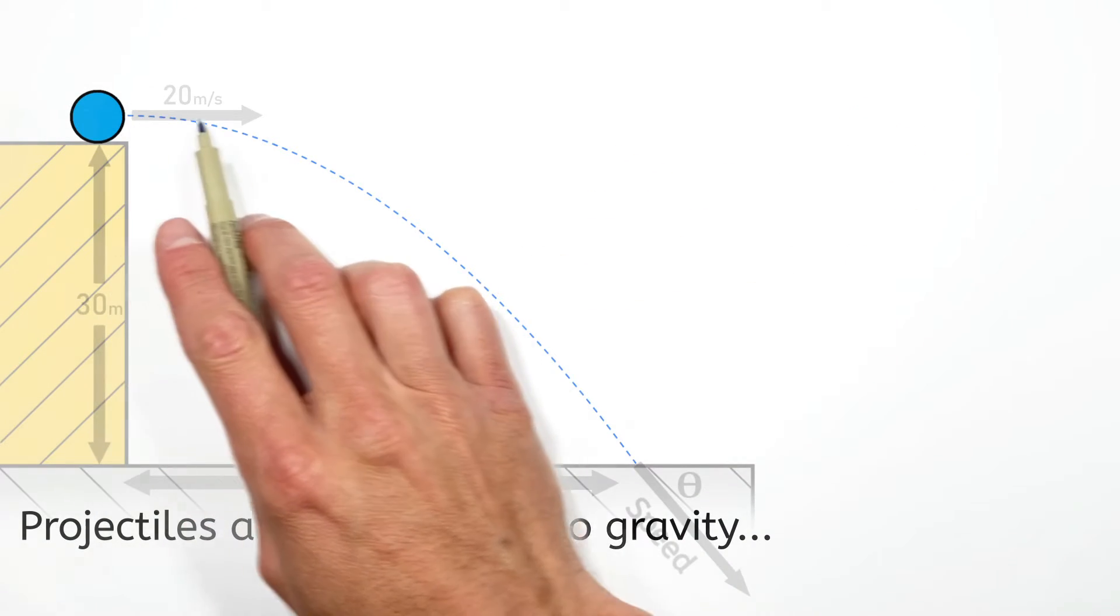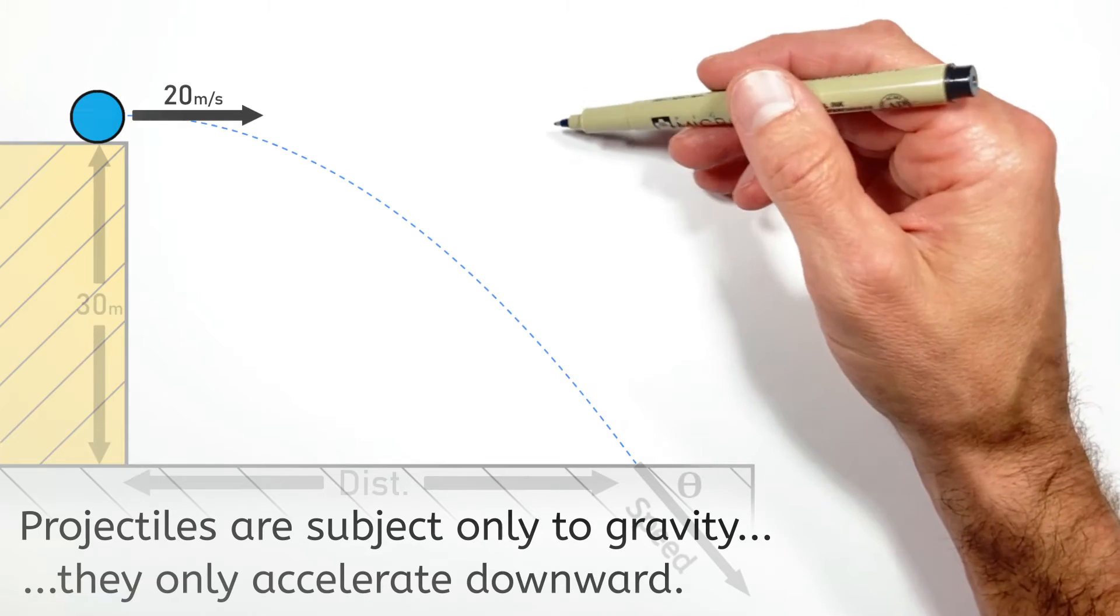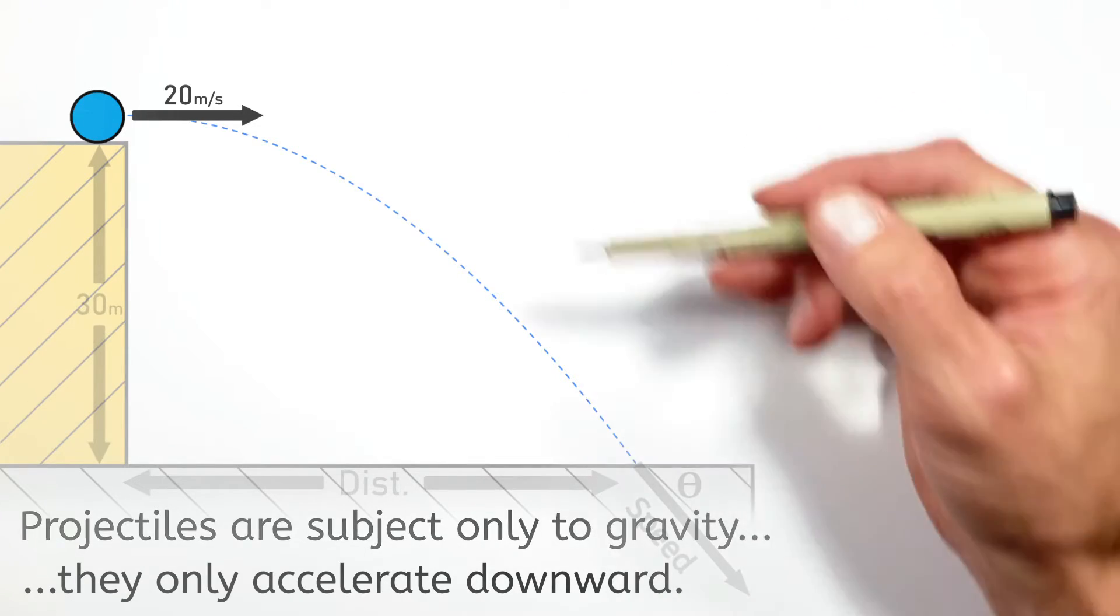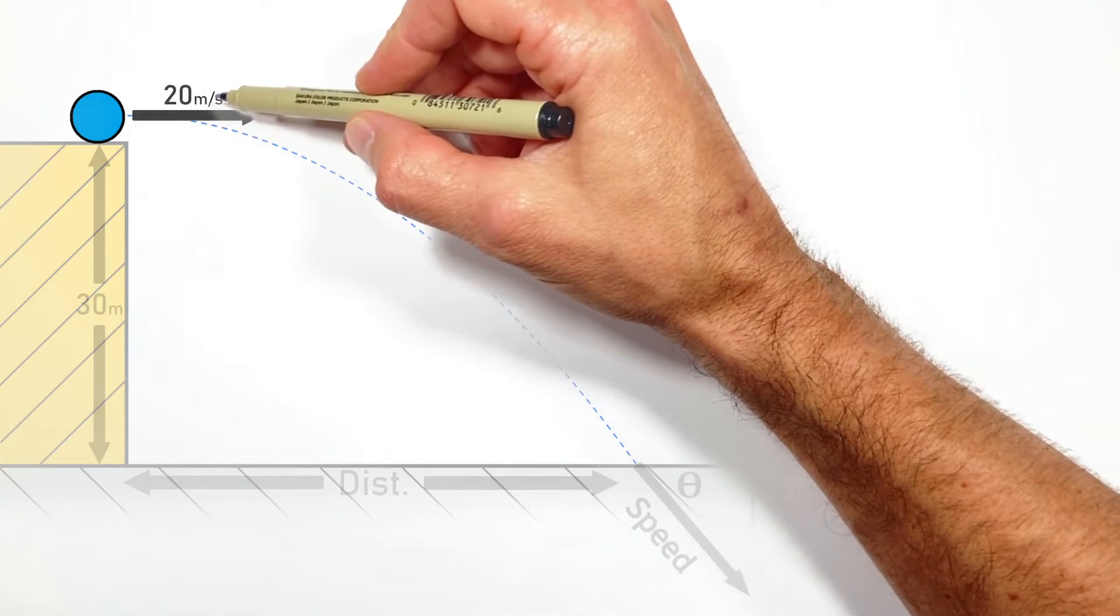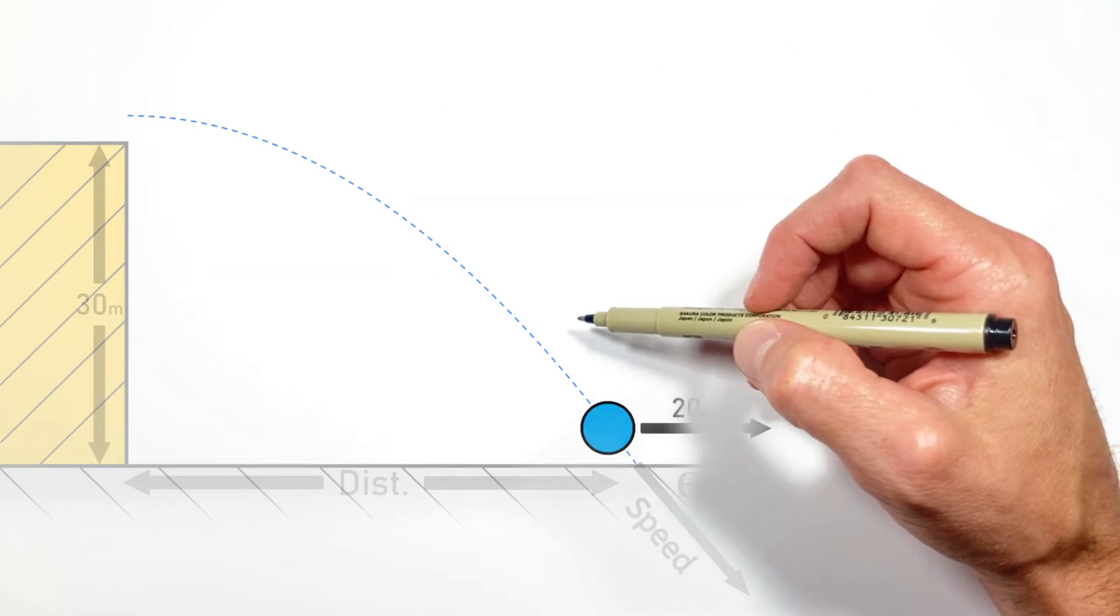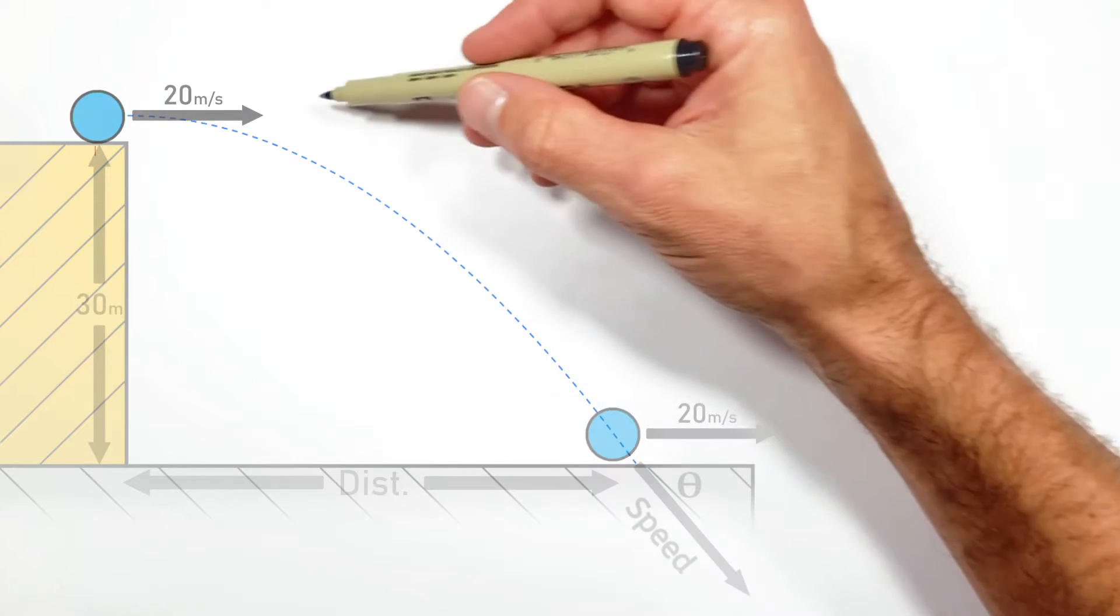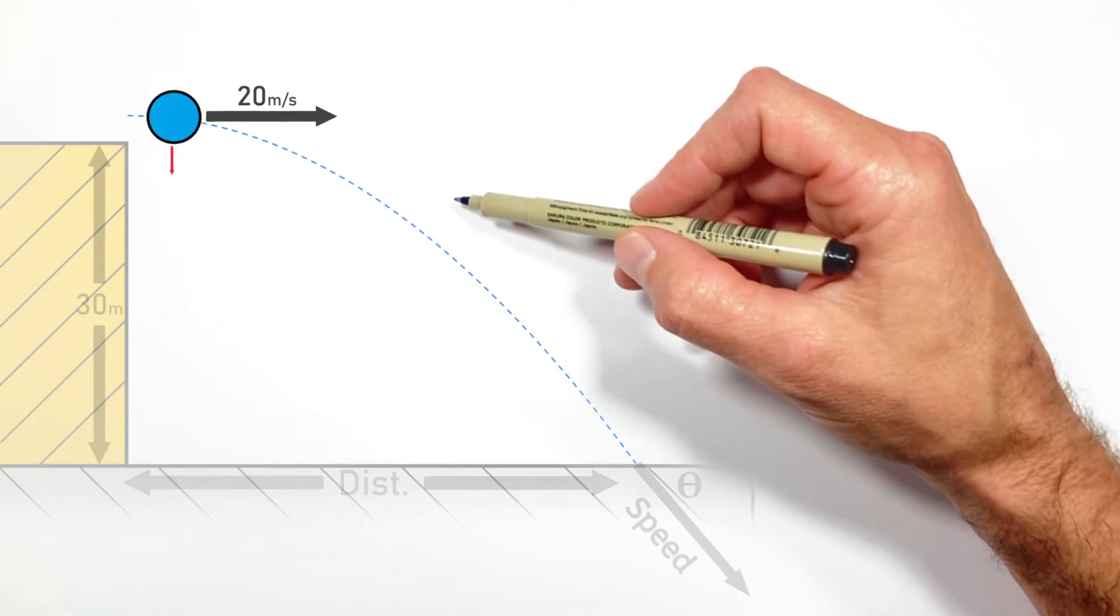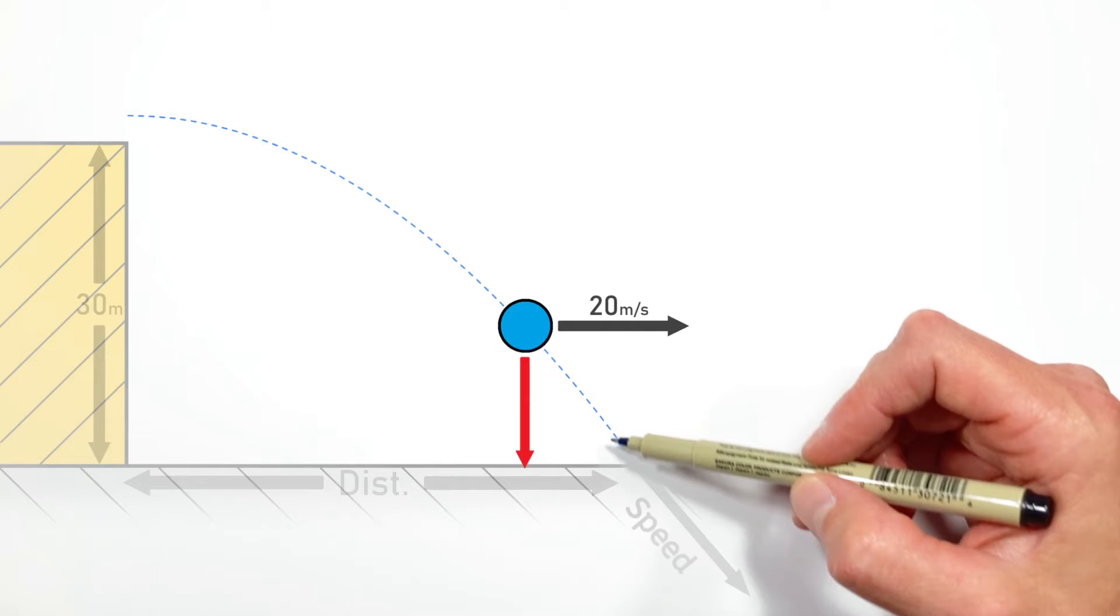Meaning this ball, even though it's thrown horizontally, is only accelerating downward. So as the ball moves through the air, its horizontal velocity is never going to change, but vertically it's going to be speeding up as time goes on.